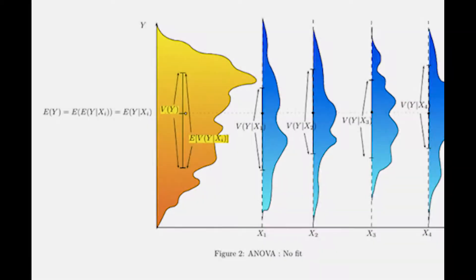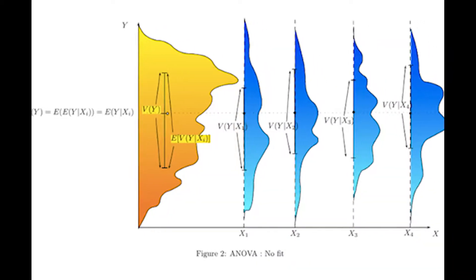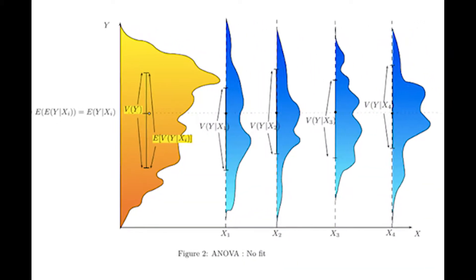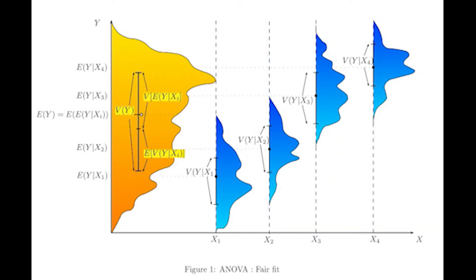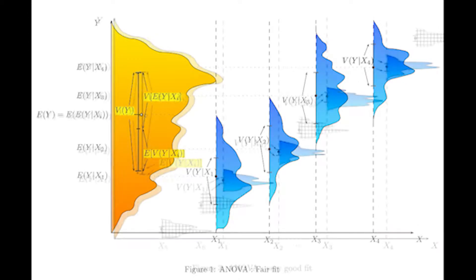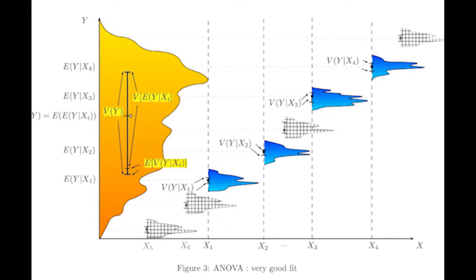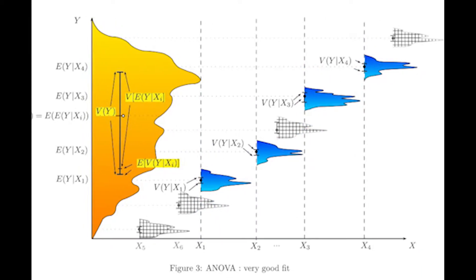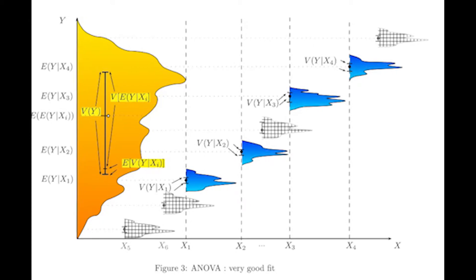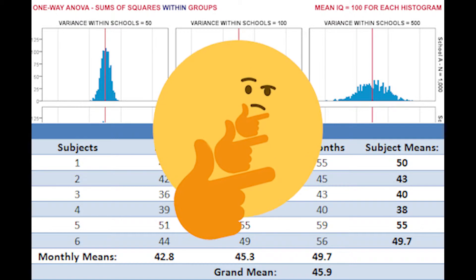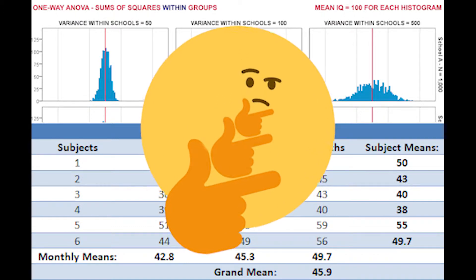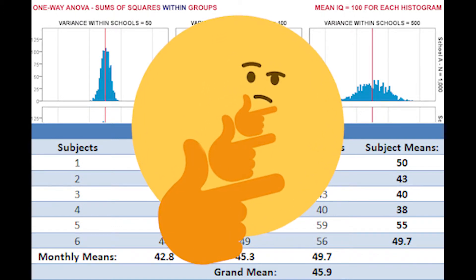Ronald Fisher developed the Analysis of Variance, or ANOVA, which is used to see whether or not means of several groups are equal. ANOVA can be used to do a t-test of more than two groups. ANOVA is used in present day to compare three or more groups' means in order to find statistical significance. If ANOVA didn't exist, it would be impossible to determine statistical significance of results of experiments consisting of three groups or more.